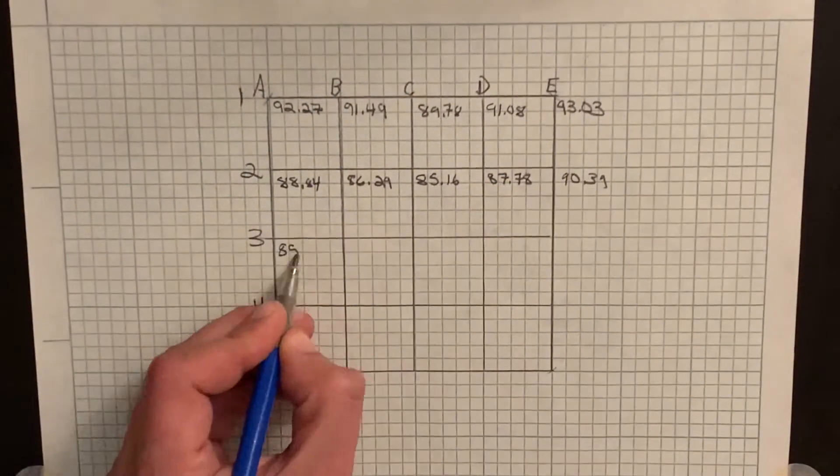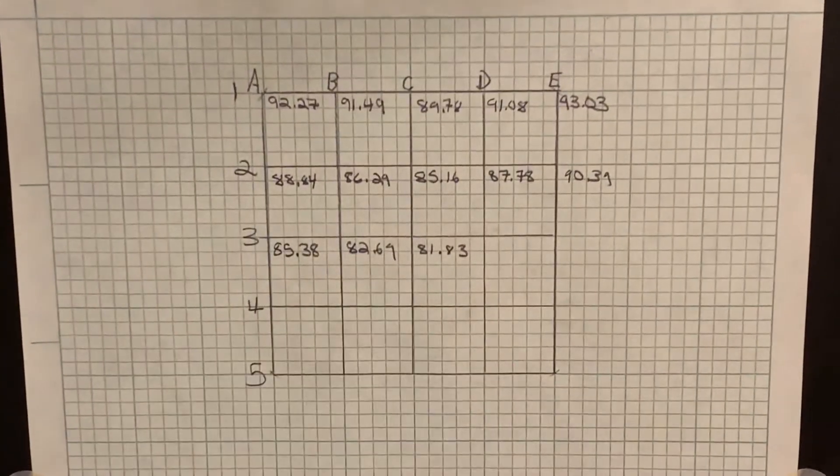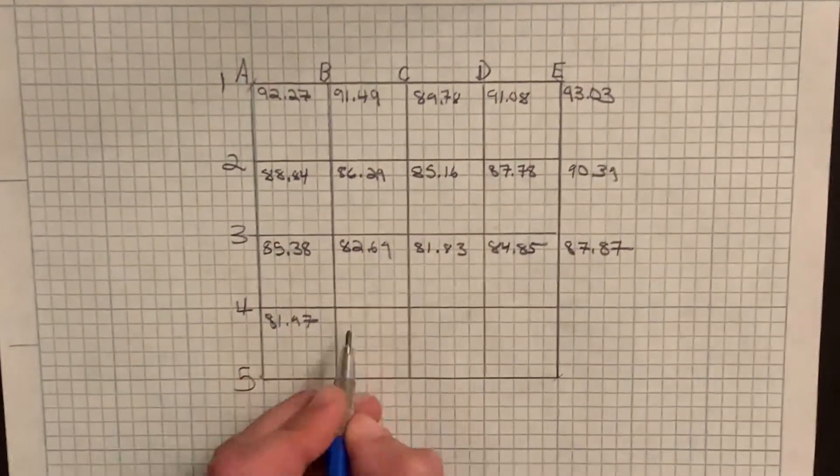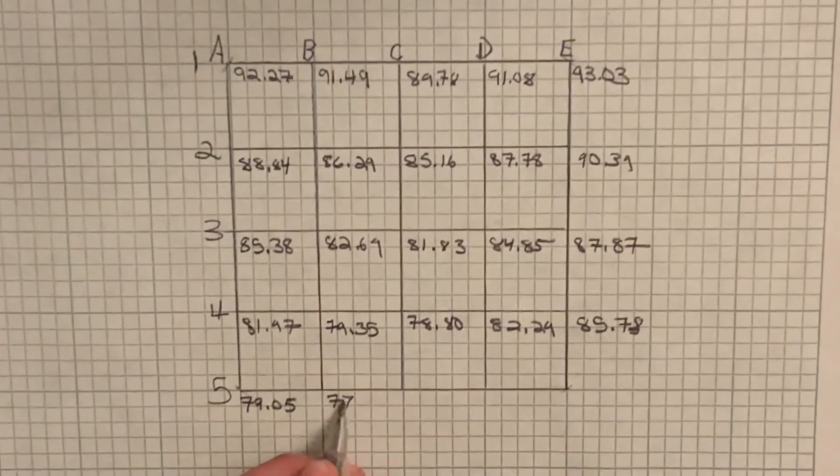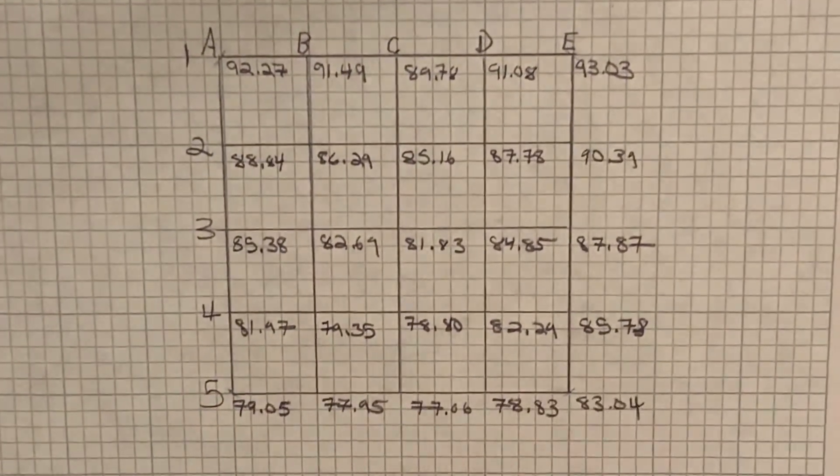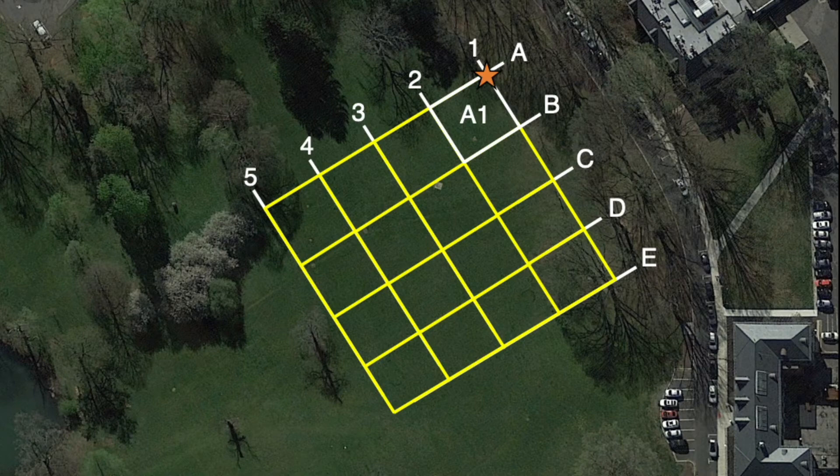Hi everyone, this is Chris. Welcome back to part two of our tutorial on creating a contour map. Where we last left off, we had created a landscape grid and recorded elevations in relation to each grid square.